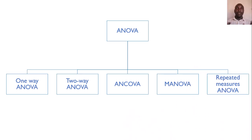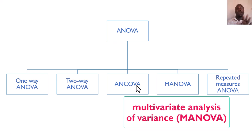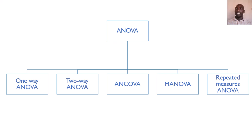The most common types of ANOVA you'll come across include one-way ANOVA, two-way ANOVA, ANCOVA (analysis of covariance), MANOVA (multiple analysis of variance), and repeated measures ANOVA. Let's go into the details of each of these.